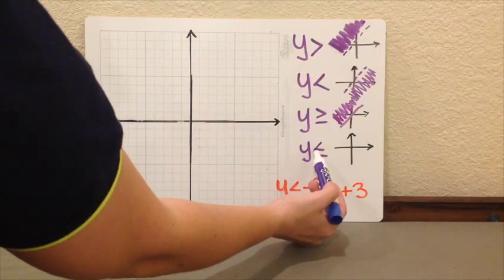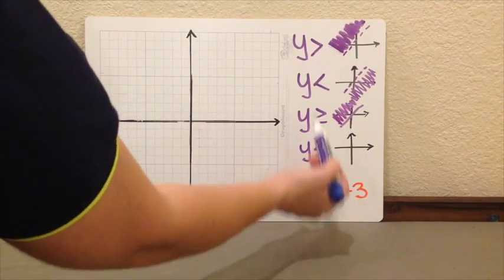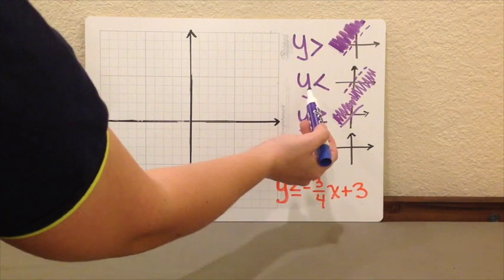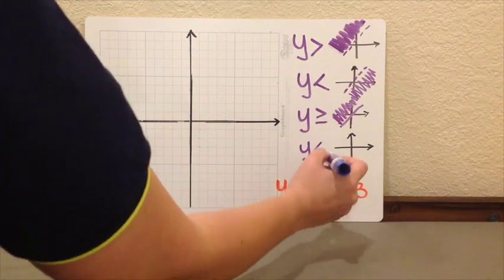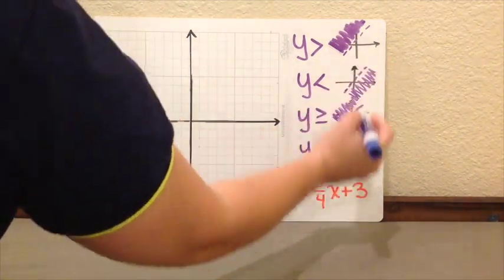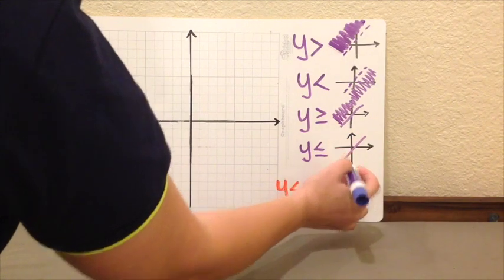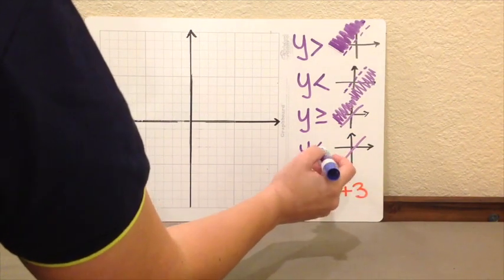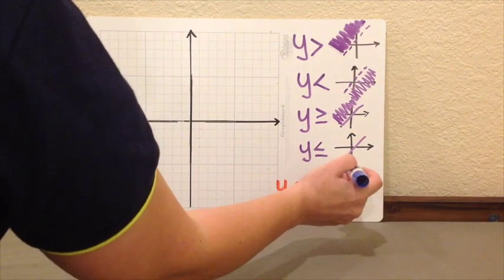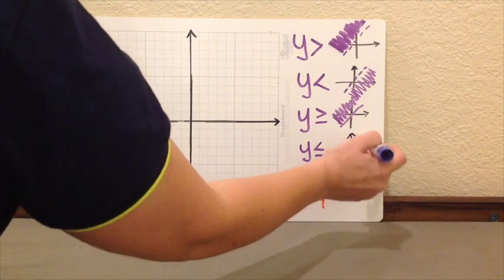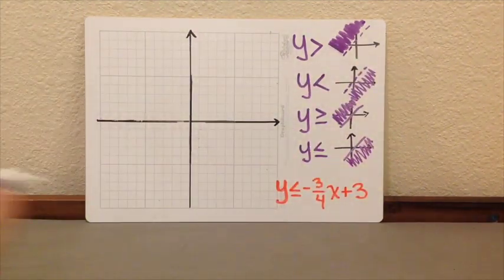At last, we have y less or equal, which obviously is going to be very similar to less. Just that now, instead of having a dotted line, now we are going to have a solid line. And we are going to shade, since y is less, the bottom part of your graph.